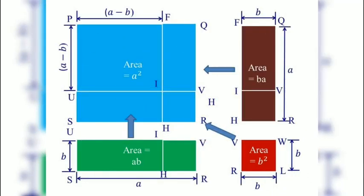This figure for step 5 shows how to paste two rectangles on square PQRS. One rectangle is pasted on the right side of square PQRS and another rectangle is pasted on the lower side of square PQRS. The overlapping area is a square having area B square square units.